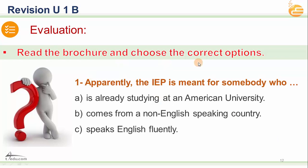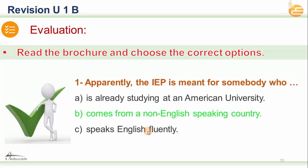Now for multiple choice questions from the reading text. Question one: The IEP — Intensive English Program — is meant for whom? Option A: someone already studying at an American university. Option B: someone from a non-English speaking country. Option C: someone who speaks English fluently. The correct answer is B — the IEP is designed for non-native speakers.